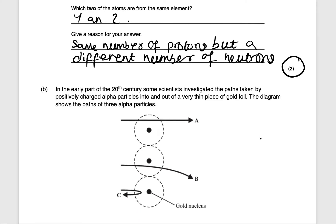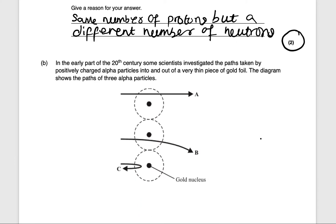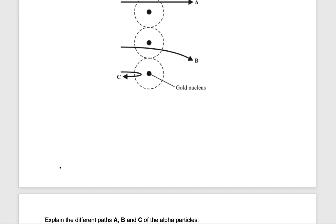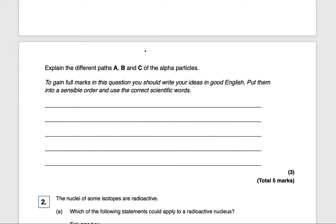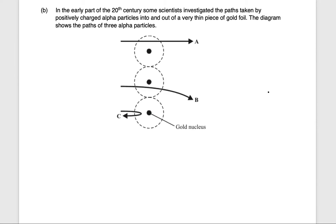Next question: in the early part of the 20th century, some scientists investigated the paths taken by positively charged alpha particles into and out of a very thin piece of gold foil. The diagram shows the paths of three alpha particles — A, B and C — with a gold nucleus. Some pass straight through, some are deflected, some are repelled. The question asks us to explain the different paths A, B and C.